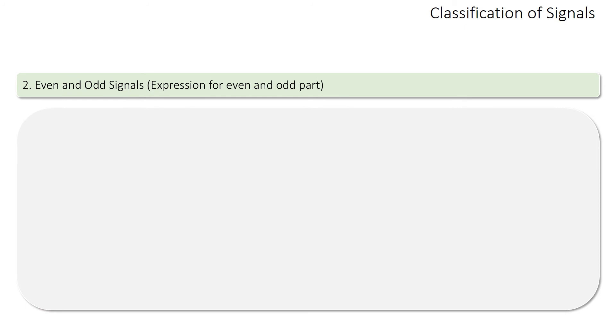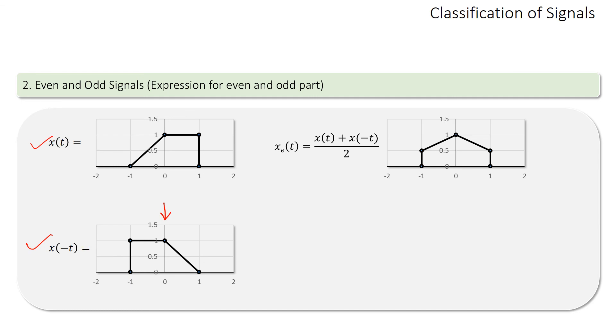Let us understand with an example. If we have a signal x(t), then x(-t) can be drawn by taking the mirror image with respect to the vertical axis. Then the even part of the signal can be computed by adding these two signals and dividing by 2. Hence we get the even part of the signal.